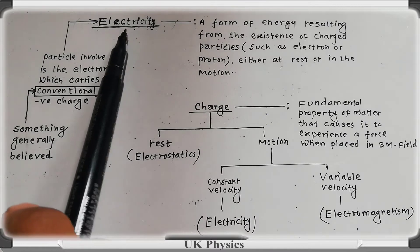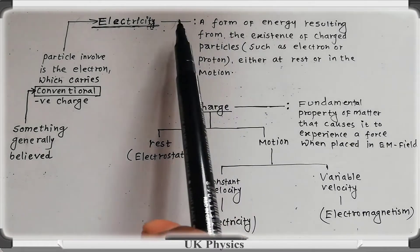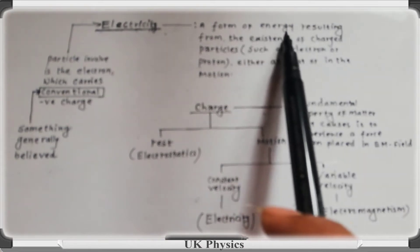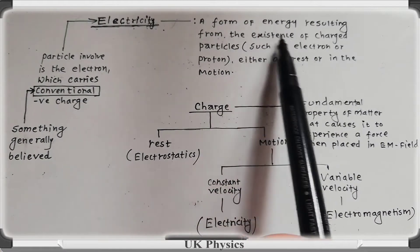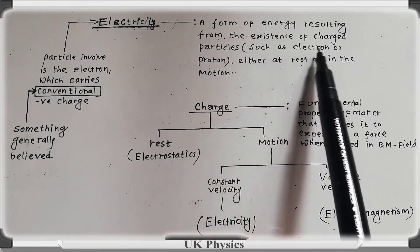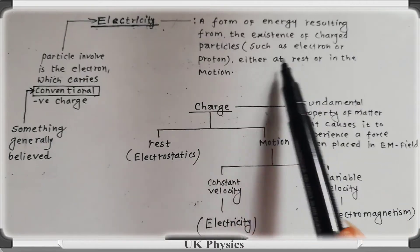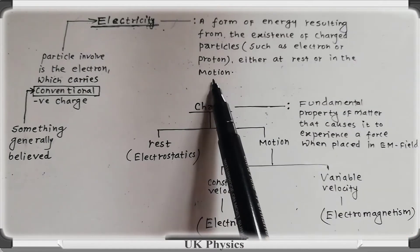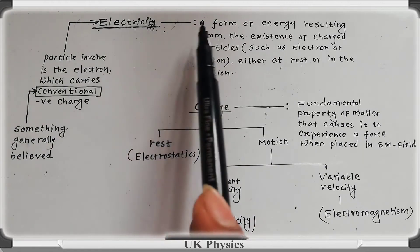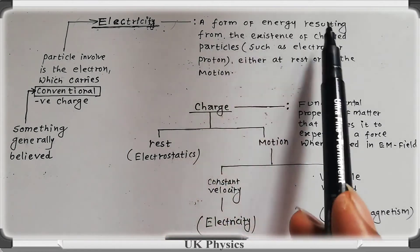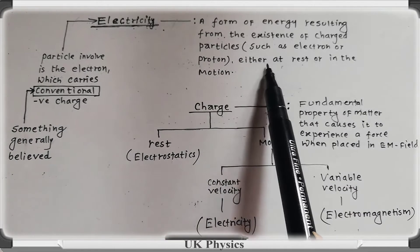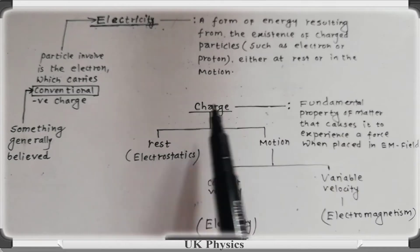The simple definition of electricity is a form of energy resulting from the existence of charged particles such as electrons or protons, either at rest or in motion. Simply, electricity is a phenomena associated with charged particles either at rest or in motion.